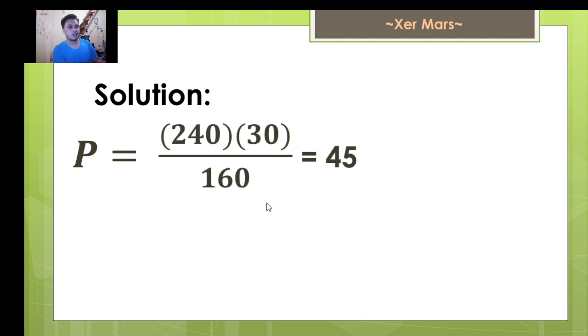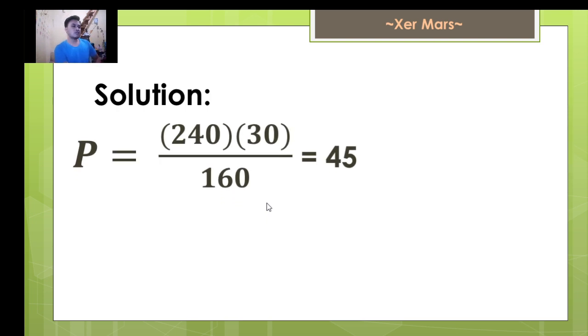Our solution is this one: P equals 240 times 30 over 160 equals 45. So what I did is just multiply the first two quantities and divide the product to the third quantity. And that is equal to 45.